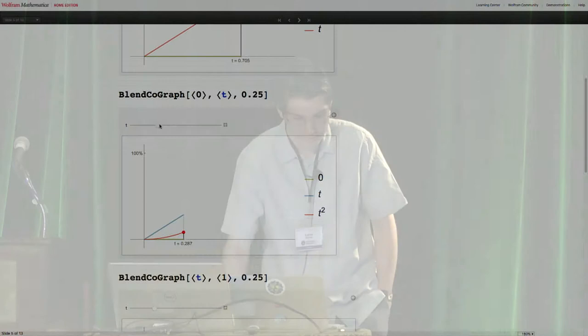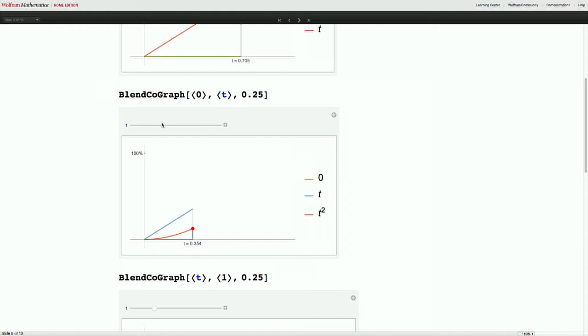And that looks like this. At time 1 third we are 1 third of the way to t which is itself 1 third. So this becomes t squared, 1 third times 1 third at this point and so on. And this starts with velocity 0. So we're getting somewhere.